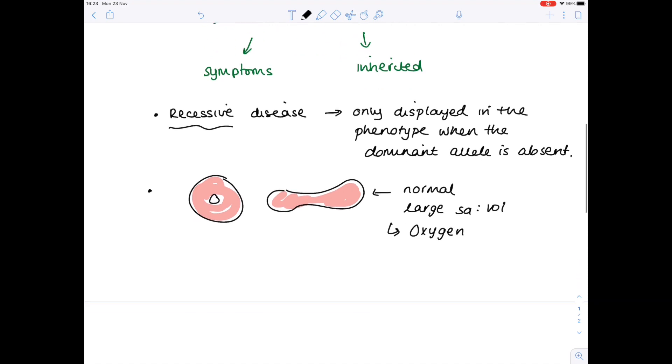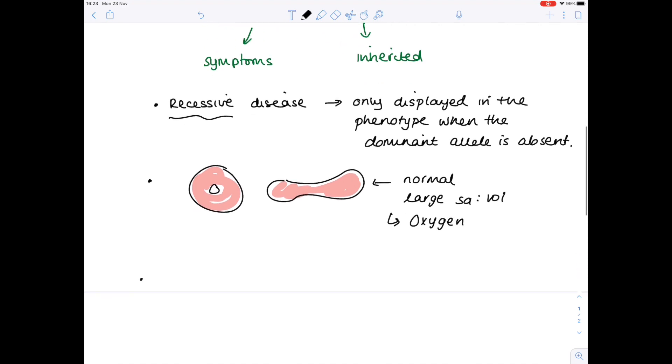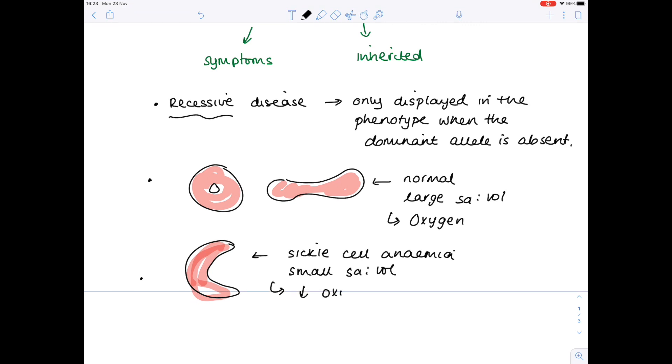Unfortunately, in the case of sickle cell anemia, you find that the red blood cells are sickle shaped, which kind of means they're like crescent moons. And because of this, far less oxygen is transported, and that's due to a smaller surface area to volume ratio. So less oxygen transported, and you do find that there's quite a lot of internal bleeding. So the mortality rate for this disease is quite high.